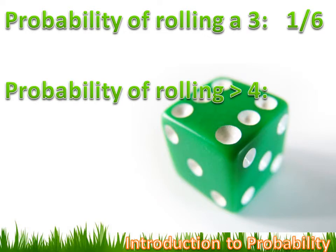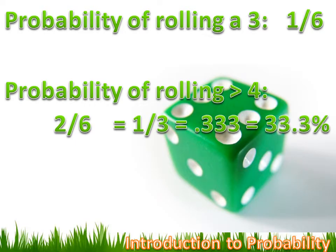What if my experiment wanted me to find the probability of rolling a number greater than four? Well, there are two ways to win — I can roll a five or I can roll a six — and there are four ways to lose: I can roll a one, two, three, or four. So there are two ways to win and six potential outcomes. My probability is two divided by six, which simplifies to one divided by three, and I can convert that to a decimal and then to a percent.